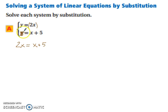You're replacing the y with the entire value. That's substitution. Now we've got to solve for x. We can subtract x from both sides so we get the variable on the same side of the equation. So then we're left with x equals 5.